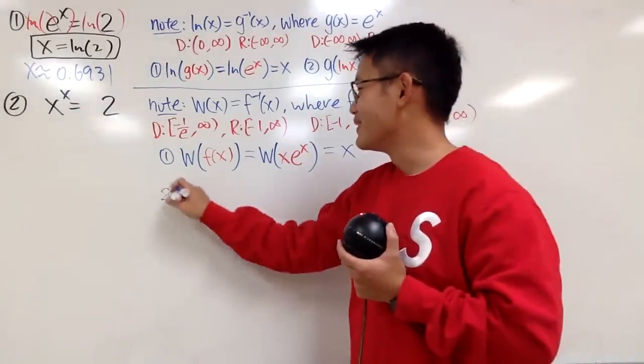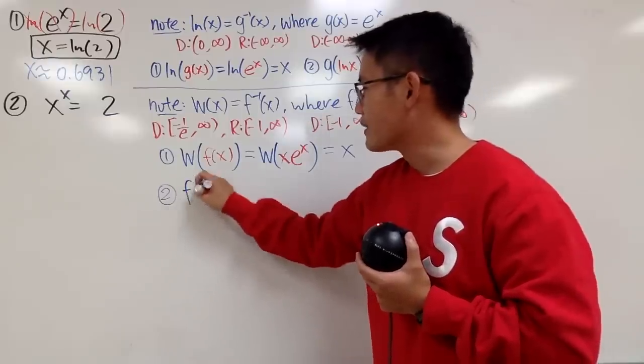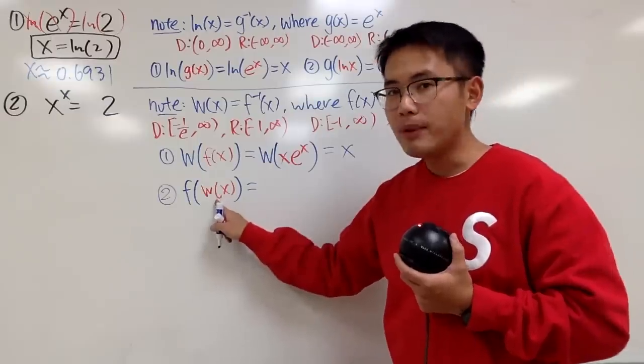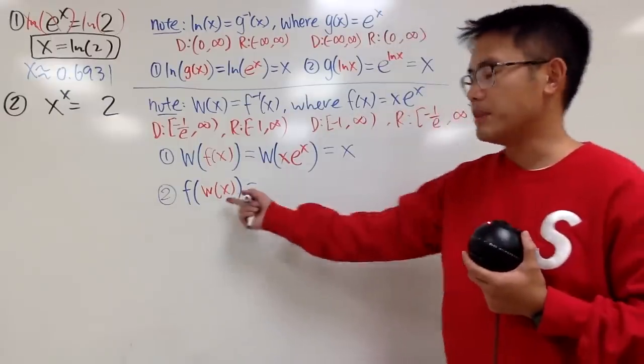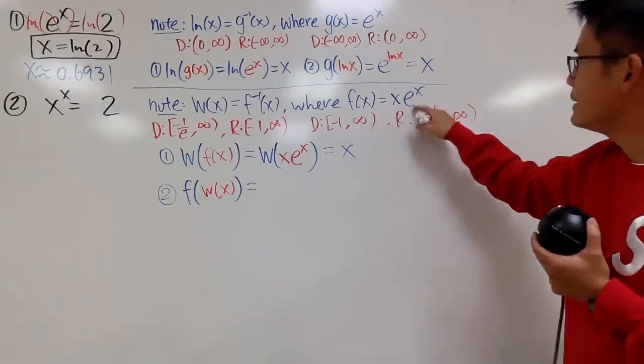Now, let's do the second one. Of course, we switch the order. What if we put f on the outside, and then w in here? Well, w, I really don't have the other expression, I'll just keep it as w, but we know f is x times e to the x.